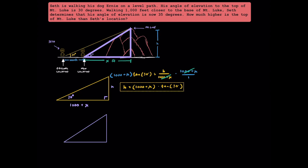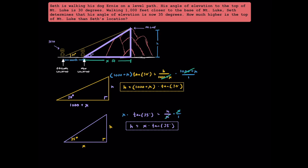Now let's look at the right triangle formed when Seth got closer to Mount Luke. Here's our right angle, 35 degrees is our angle of elevation, this represents our height h, and x represents our horizontal distance. From here, we can say that tangent of 35 degrees is equal to h over x. Just like the triangle above, let's isolate h by multiplying both sides by x, so h is equal to x times tangent of 35 degrees. And this is what we found from our second right triangle.